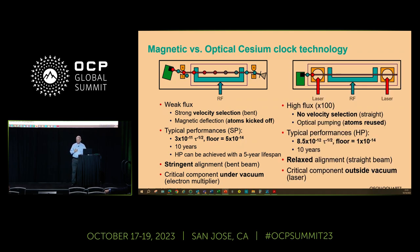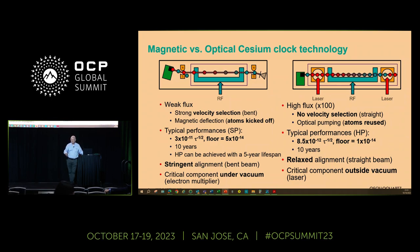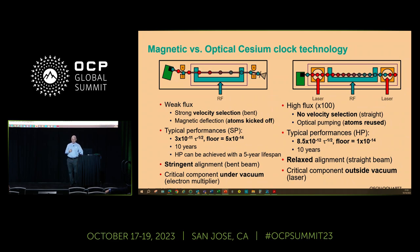With optical pumping, the atom beam is straight — there is no velocity selection. 100% of the atoms are used. As a result, you can achieve high performance or super high performance without increasing the oven temperature, meaning you can maintain a minimum 10-year life cycle while achieving high performance. This is really the magic of this unique technology.